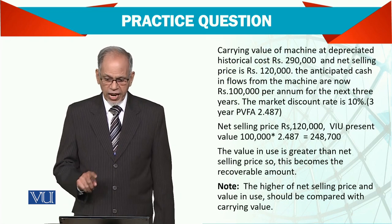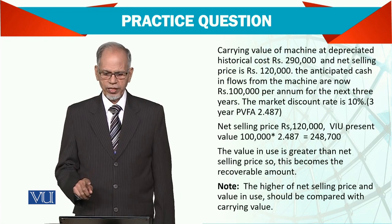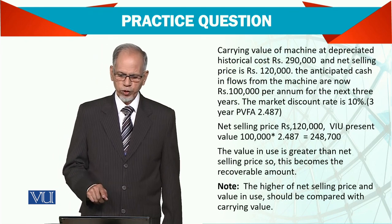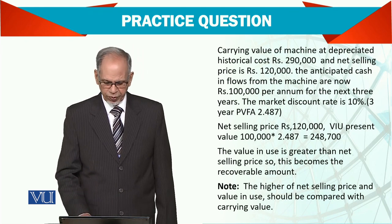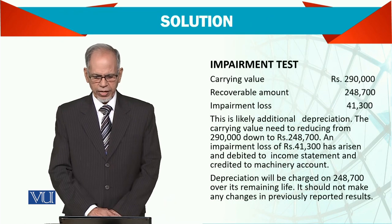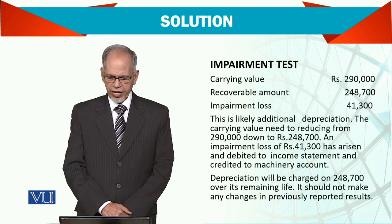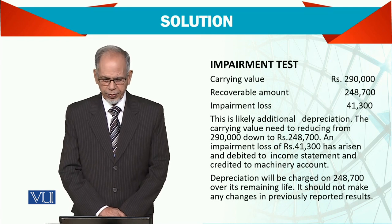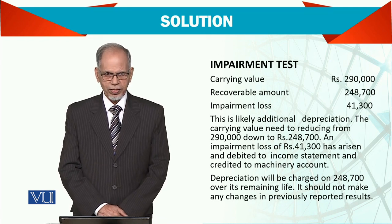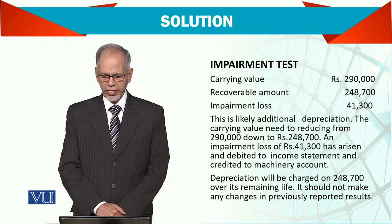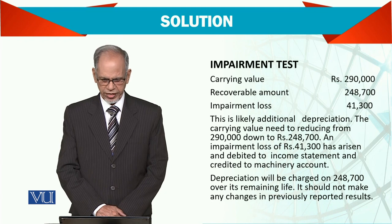The higher of the two — the higher of net selling price and the value in use — should be compared with the carrying value. Now let's see the impairment test. Carrying value is $290,000, the recoverable amount is $248,700, and the impairment loss is $41,300.